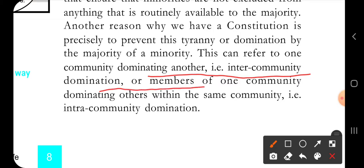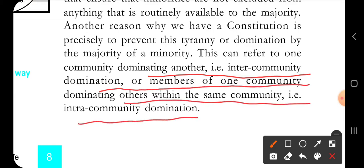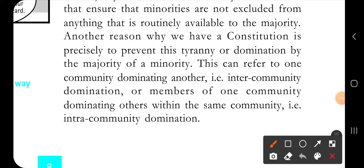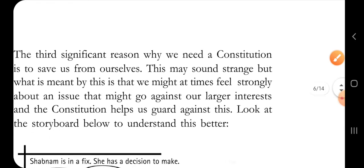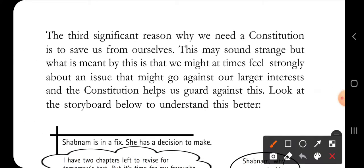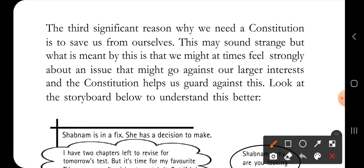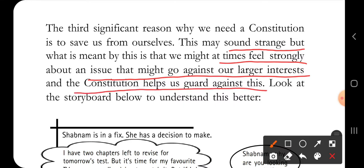This injustice is stopped by the constitution, preventing the majority from dominating the minority. This can refer to one community dominating another - intercommunity domination - or members of one community dominating others within the same community - intracommunity domination. The third significant reason we need a constitution is to save ourselves from ourselves, meaning that we might at times feel strongly about an issue that might go against our larger interests, and the constitution helps us guard against this.